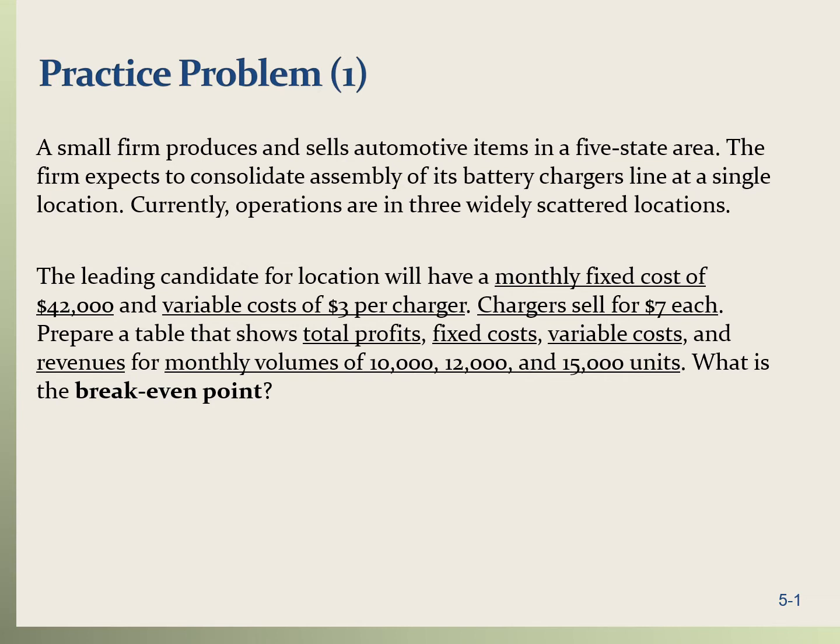So pause here, please, and work on this problem. Try to solve it. Try to build the table and compute the total profits, fixed cost, variable cost, and revenues for 10,000, 12,000, and 15,000 units. Then compute the break-even point for this problem. Then come back to see the solution.